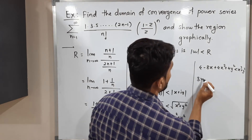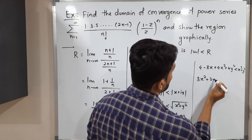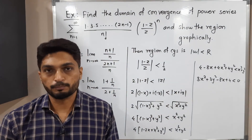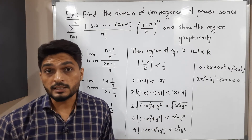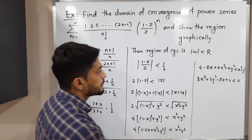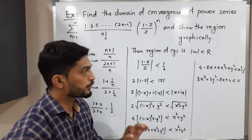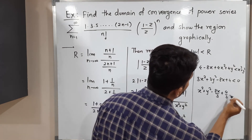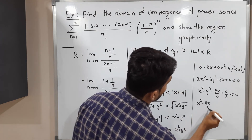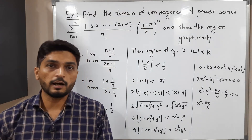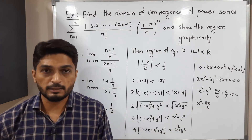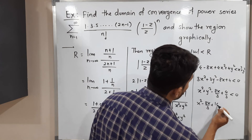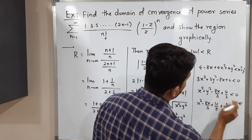Rearranging: 3x² + 3y² - 8x + 4 < 0. Dividing by 3: x² + y² - (8/3)x + 4/3 < 0. Completing the square in x: add and subtract (4/3)² = 16/9, giving (x - 4/3)² + y² < 16/9 - 4/3, which simplifies to (x - 4/3)² + y² < 4/9.